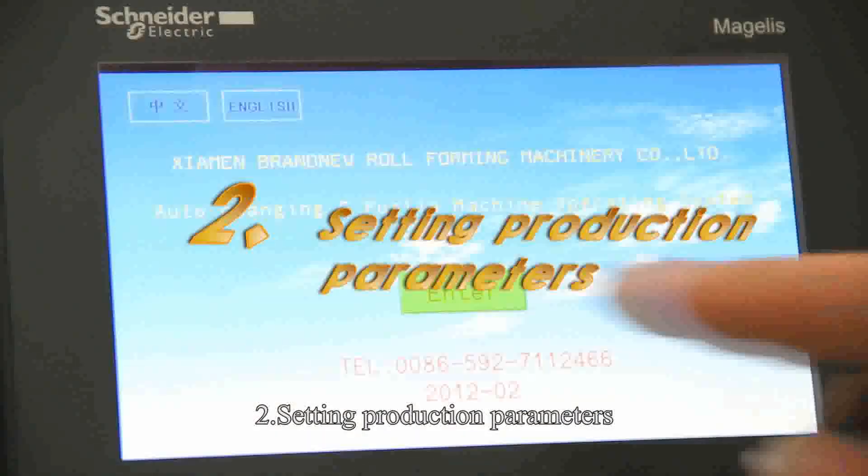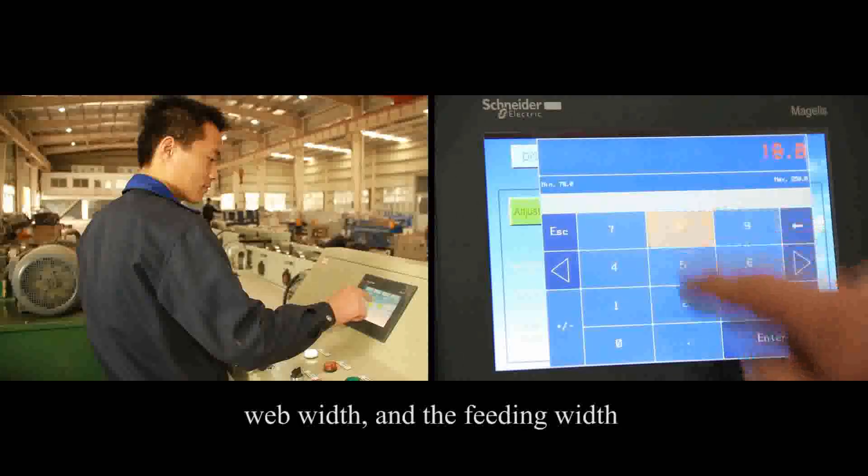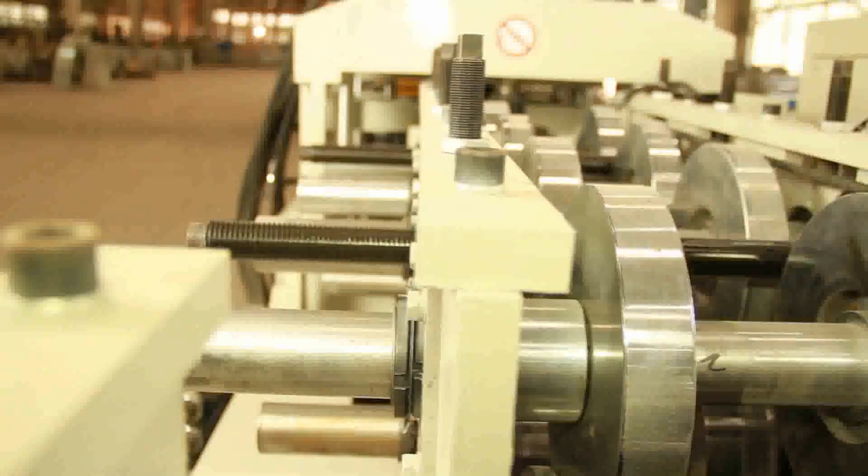Number 2: Setting Production Parameters. Input the Height, Web Width and the Feeding Width on the touchscreen of the PLC control system. Then press the Adjust Start.